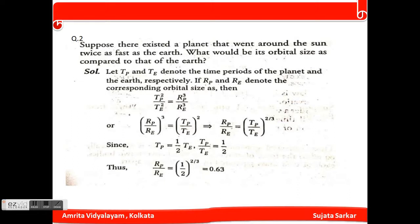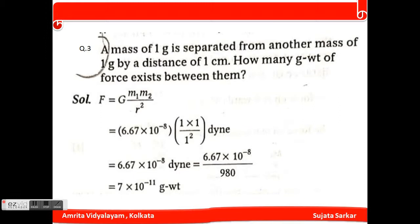Since T_p equals one-half T_e, T_p/T_e equals one-half. Thus, R_p/R_e equals (1/2)^(2/3) which equals 0.63.